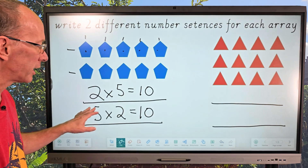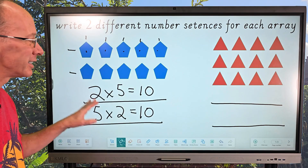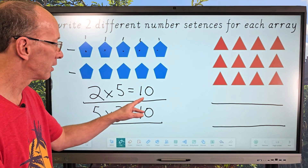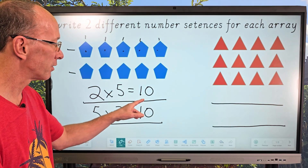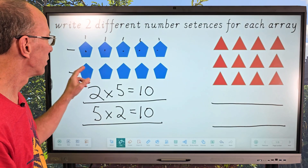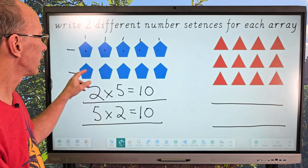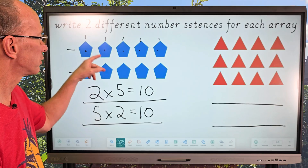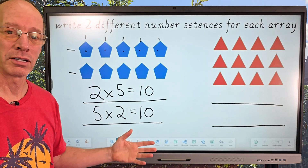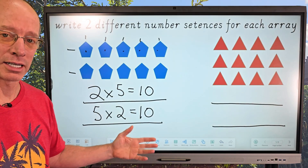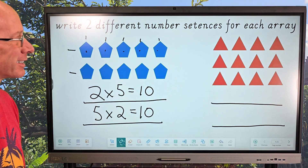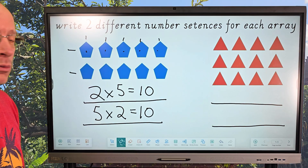You'll notice on each of my number sentences, the answer is going to be the same. If I wanted to, I could also write two plus two plus two plus two plus two, and that would equal ten. Alright, let's take a look at our next array.